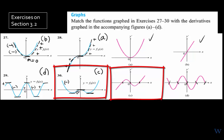Here we have negative slope, then positive, then negative, and then positive again. Checking against letter C: negative slope corresponds to a negative value — yes; then positive; then the negative slope gives negative values of the slope function; then positive as it increases. So we've finished the graphs and matched each one.